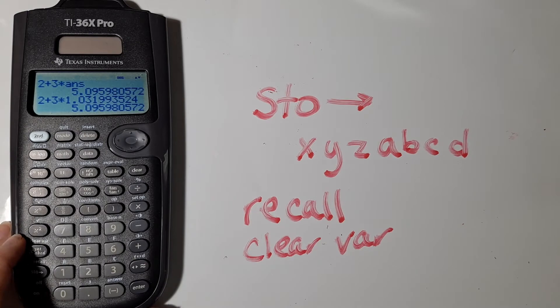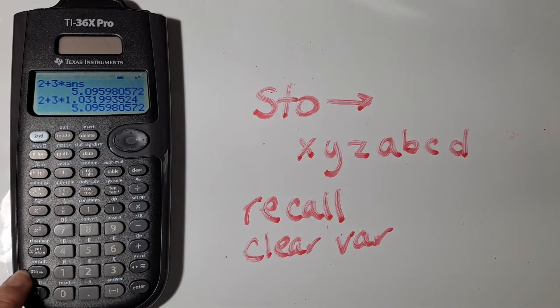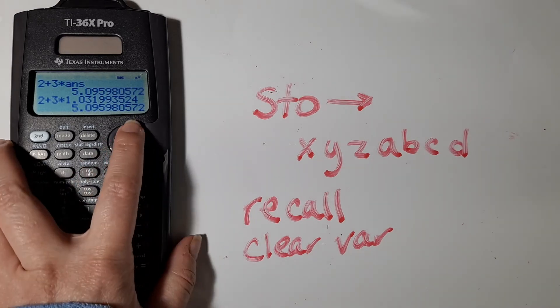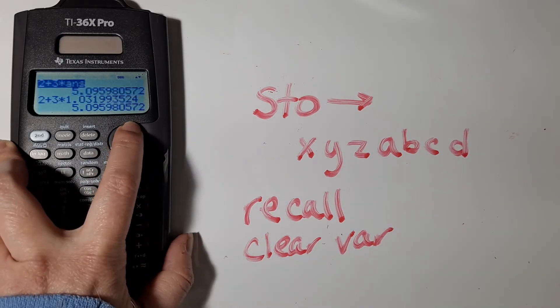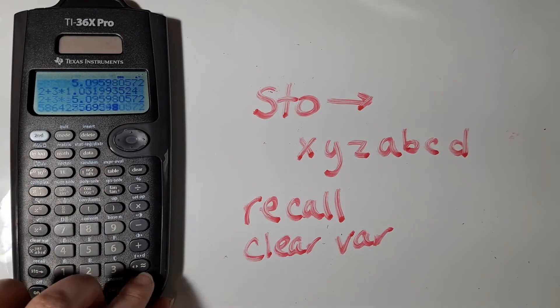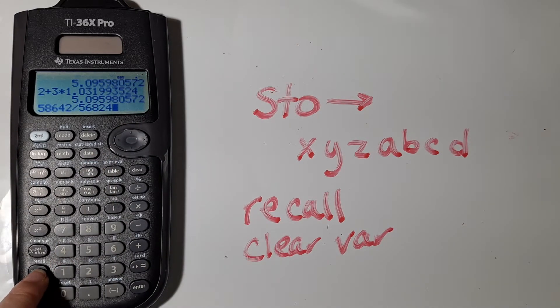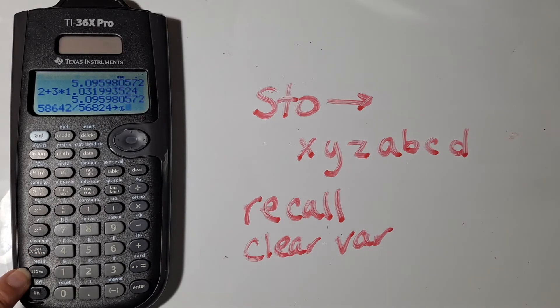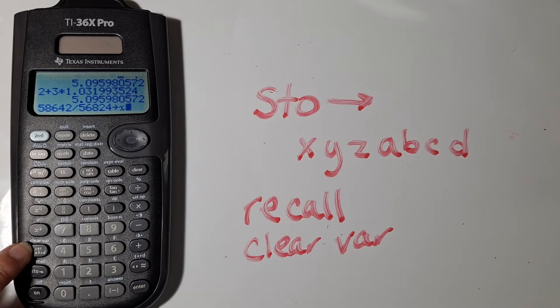Other options include storing your number as a letter. And so you can do these really long calculations. I'm just going to go up here and grab my previous calculation and I could say I want to store this number as X. And so I hit STO for store and then I hit this XYZ ABCD button to pick a letter.